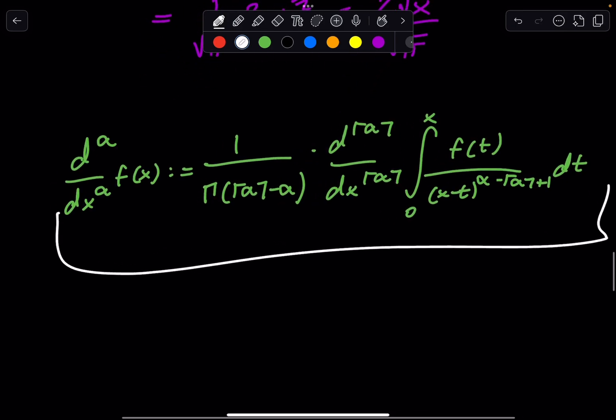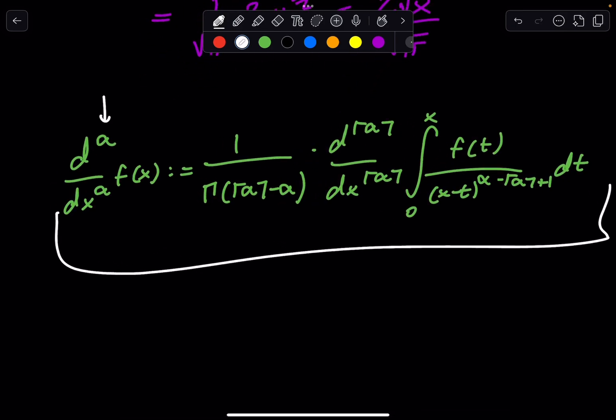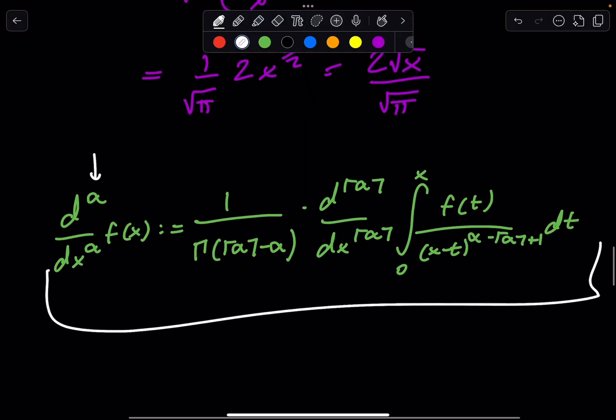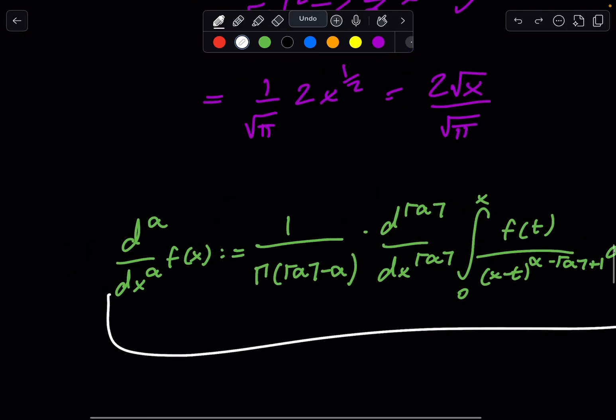But yeah, this is the generalized formula, and you can plug in any α you want. But the restrictions, there are restrictions, I believe, in the complex world, but that's a discussion over a whole other video. And I'm not even sure what it means to have α as less than 0. What does it mean to have a negative 1-th derivative? Are you taking the integral?